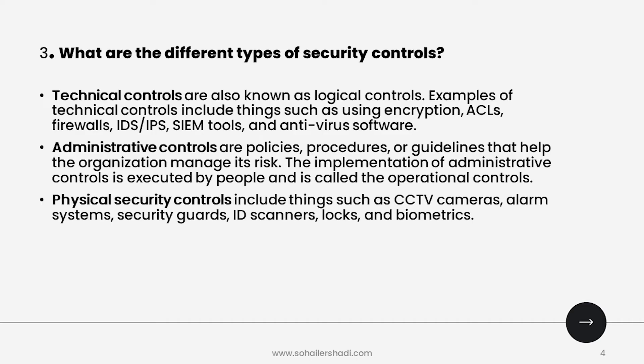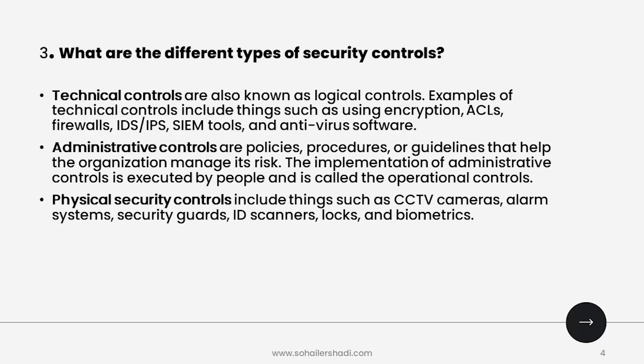There are three main types of security controls: technical controls, administrative controls, and physical security controls. Technical controls, also known as logical controls, include things like encryption, ACLs, firewalls, IDS, and IPS. Administrative controls are policies, procedures, or guidelines that help the organization manage its risk — implemented by people, these are called operational controls. Physical security controls include CCTV cameras, alarm systems, security guards, ID scanners, and biometrics.